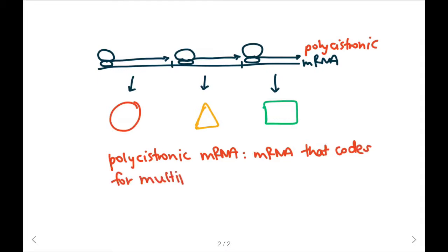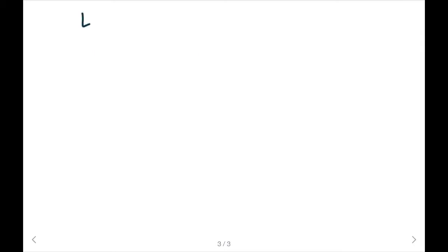Polycistronic mRNA is defined as mRNA that codes for multiple proteins. And this is different from normal mRNA because typically you'd get one mRNA coding for one protein and another coding for another.